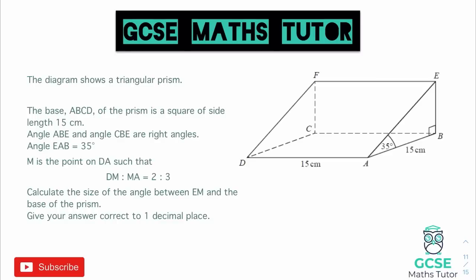Okay, so looking at this question, it says the diagram shows a triangular prism and it gives us some information about the prism, which we can see on the diagram. It says M is the point on DA, and DA is that length along the front of the prism, such that DM to MA is 2 to 3. Now M has not been placed on that, so we're going to want to put that on straight away if we can. And that is going to be just here, slightly closer to D than it is to A.